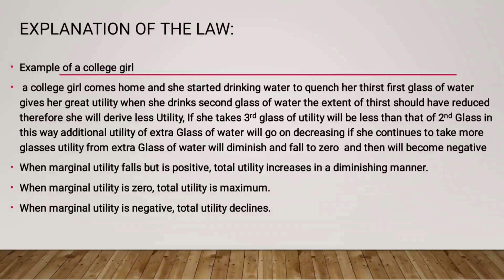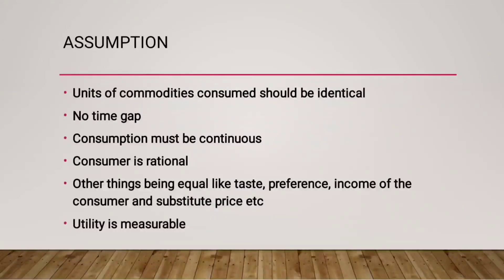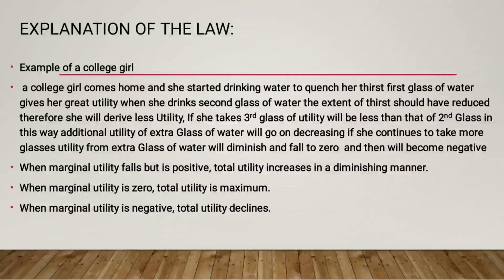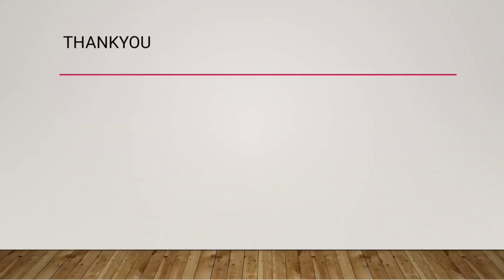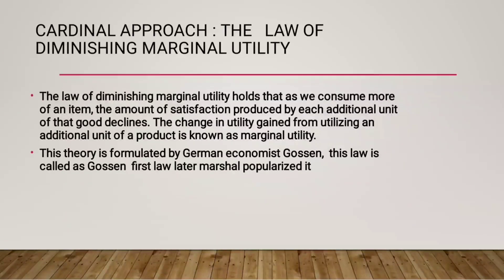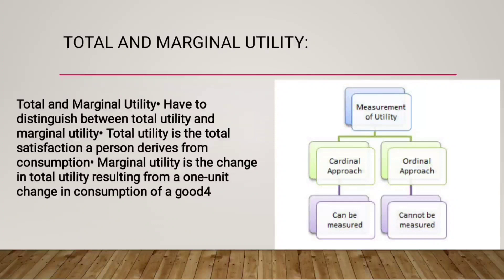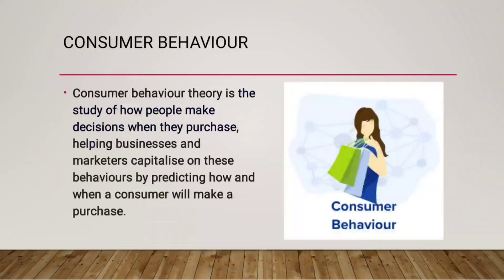With that, we have completed a very important six-mark question. If you study this topic, the introduction, assumptions, table, diagram, explanation of the law, and then write a conclusion — the more and more you consume, the less and less you want to have it; total utility increases to a saturation point and then falls; marginal utility starts highest, falls to zero, and then turns negative — you will easily get six marks. The law of diminishing marginal utility is a six-mark question, a four-mark question, and can also be asked as a two-mark or one-mark question.